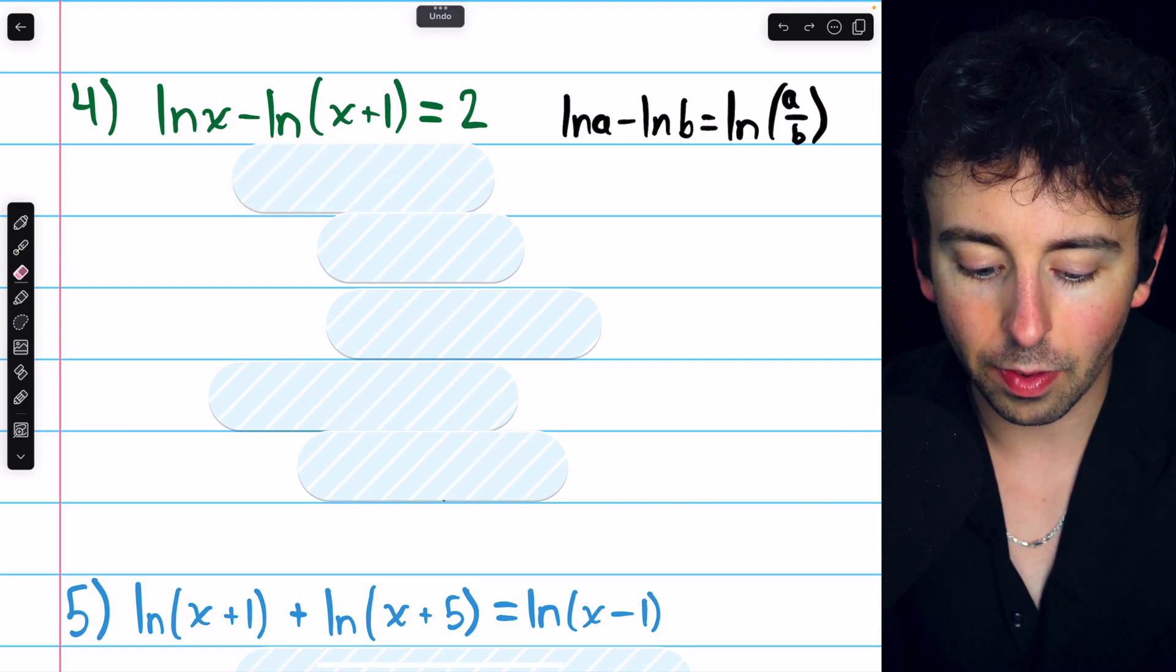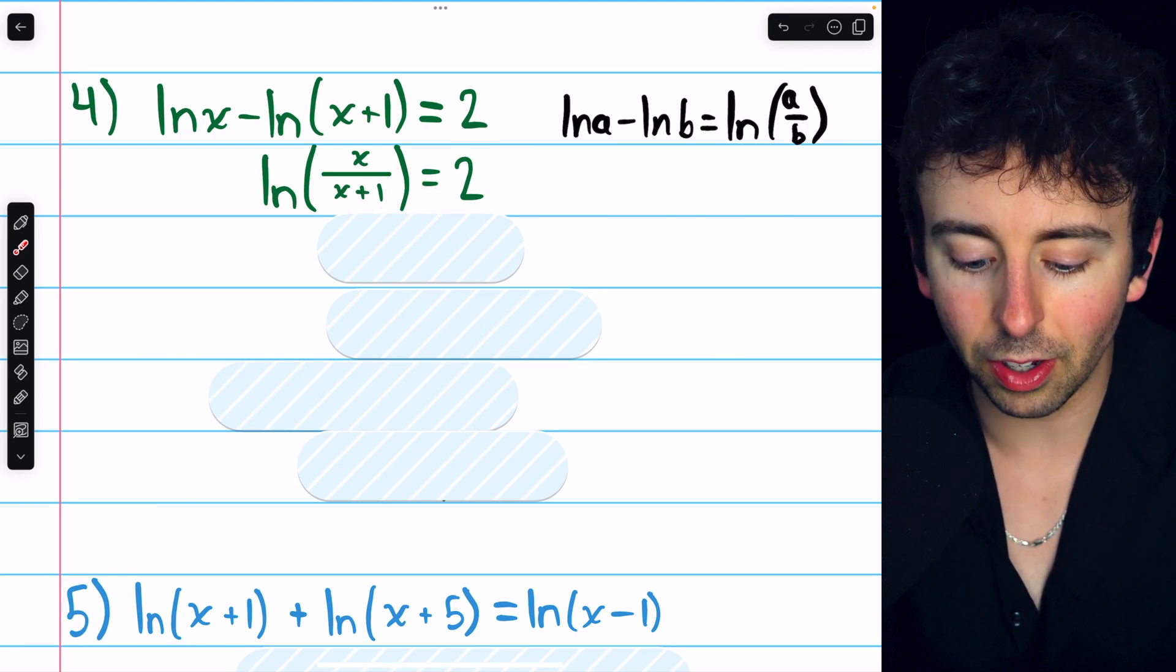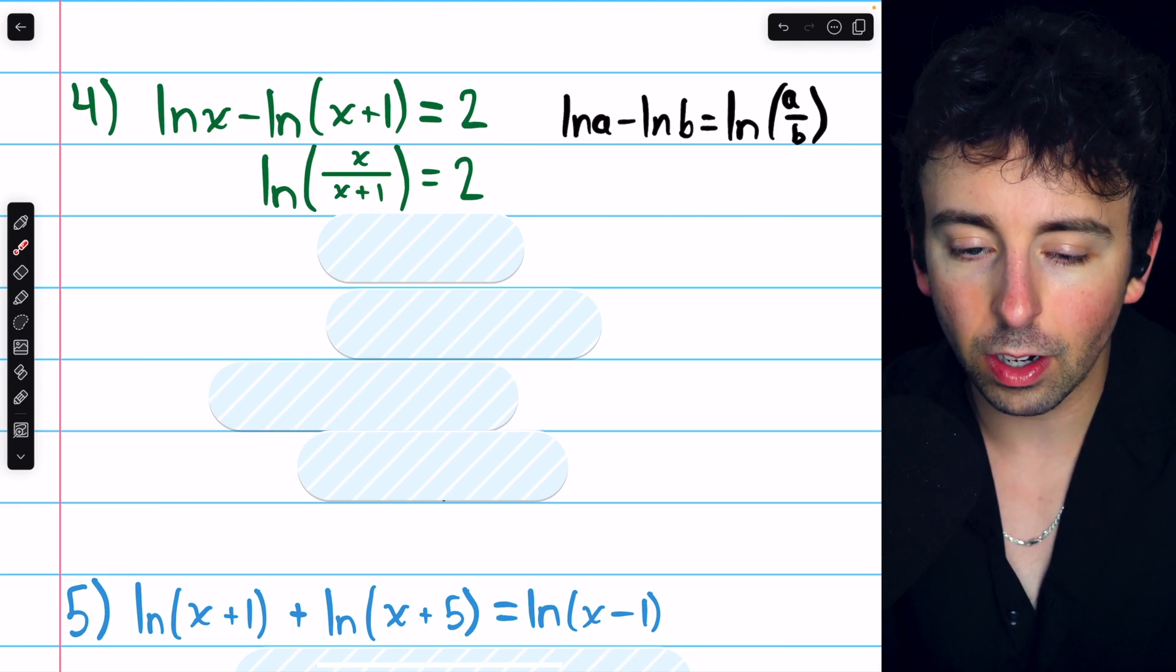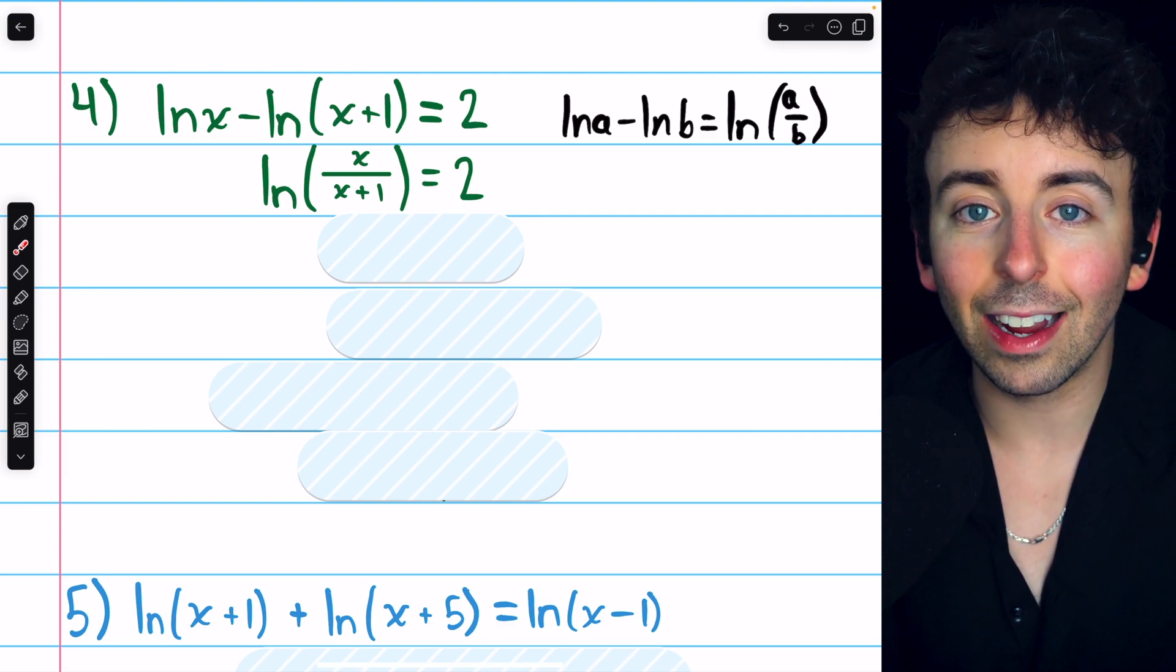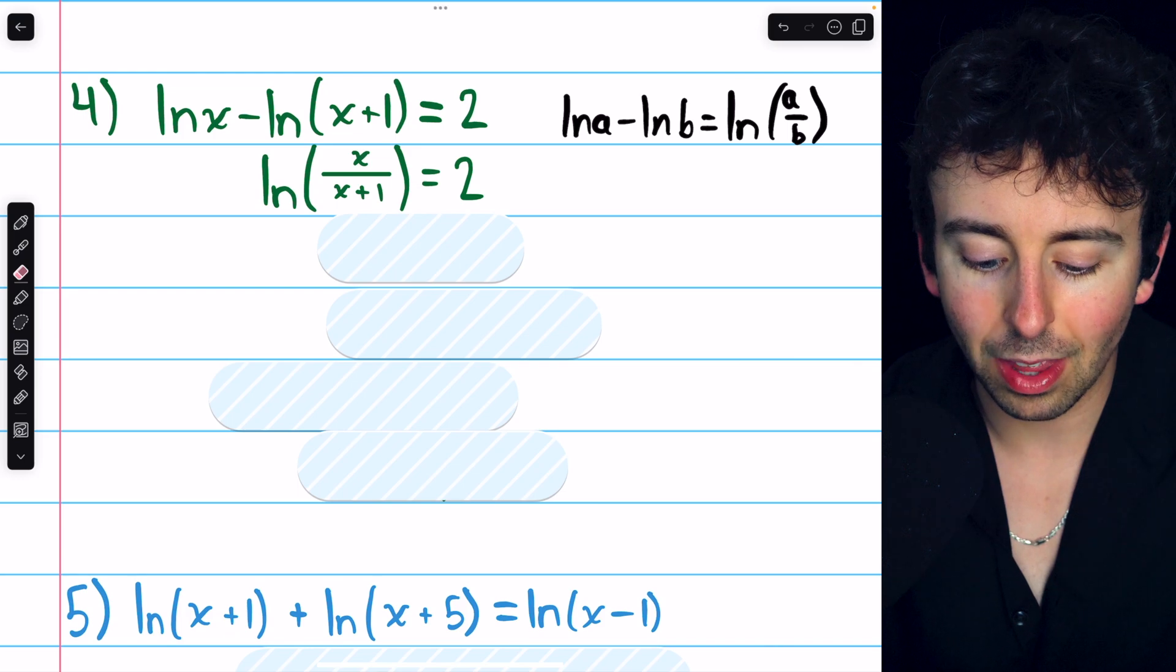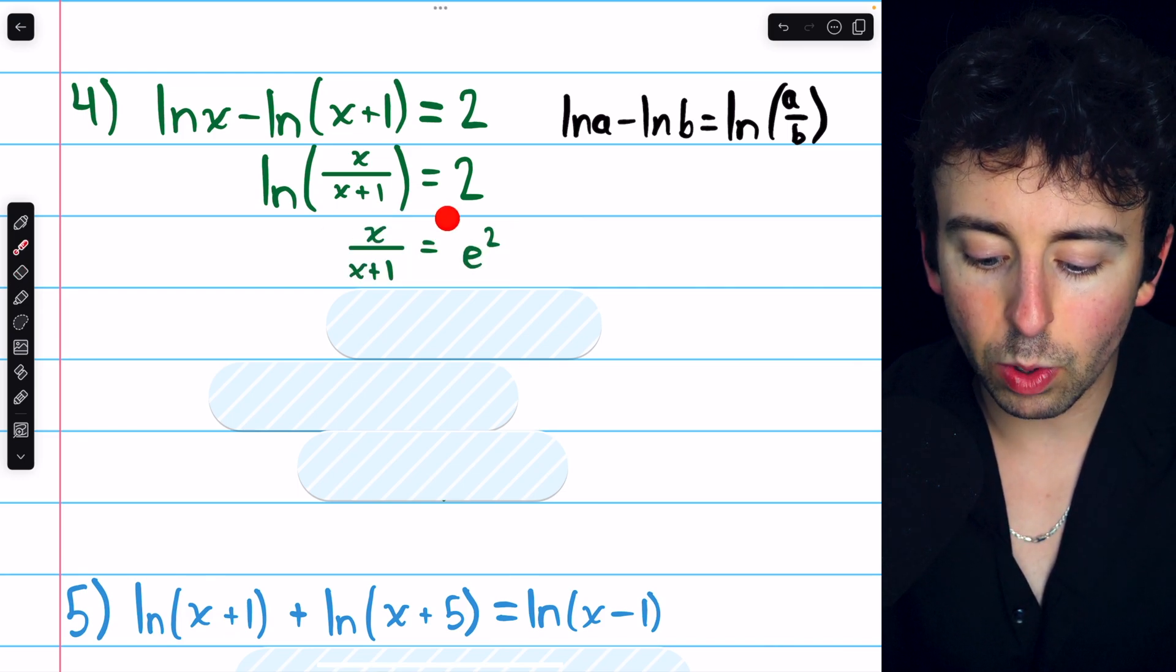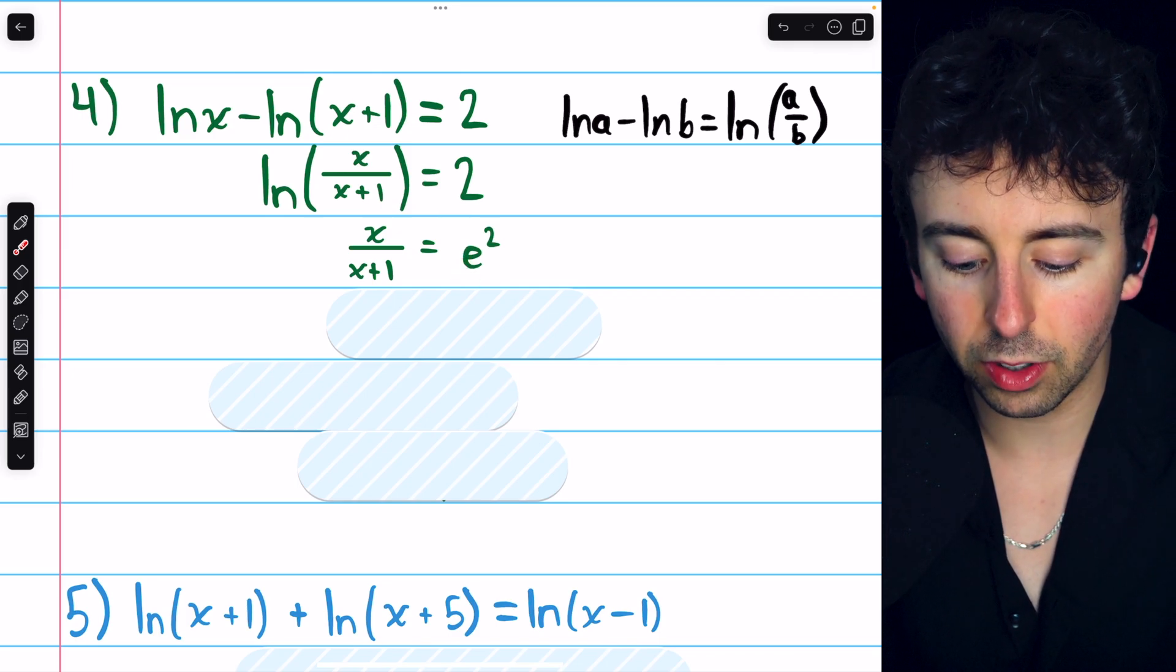The natural log of a minus the natural log of b equals the natural log of their quotient, a divided by b. So we can use that to rewrite this as a single log function. The natural log of x divided by x plus one equals two. Now we have just a single log function all by itself, so we can exponentiate both sides.